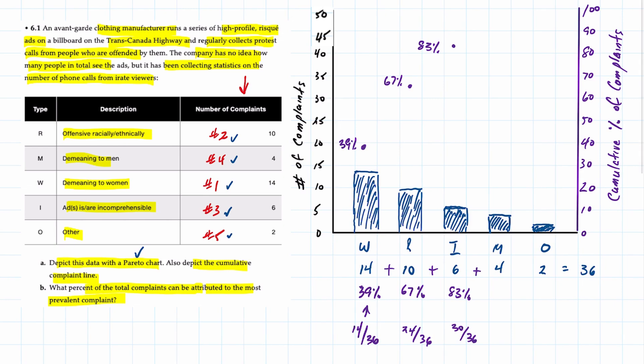Then we add the second last one or demeaning to men. So 14 plus 10 plus 6 plus 4 is 34 out of 36 which is accumulation up to 94 percent here. And then finally we add in the last two and that's going to bring us to 100 percent or 36 over 36 which would be about there.